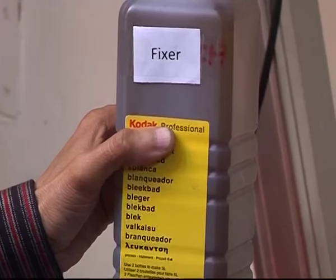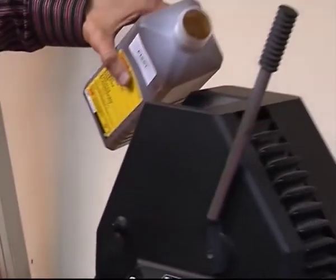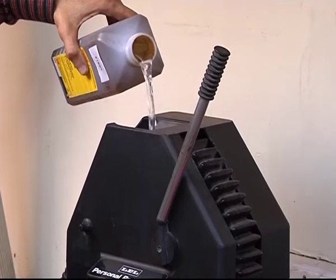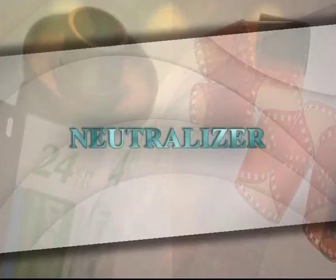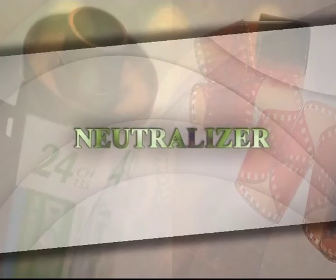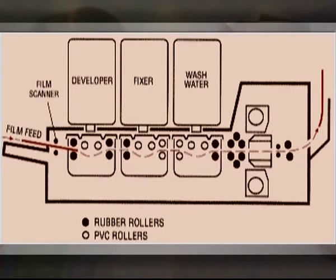Fixing. After leaving the developer, the film is transported into a second tank which contains the fixer solution. The fixer is a mixture of several chemicals. Neutralizer: when a film is removed from the developer solution, development continues because of the solution soaked up by the emulsion. It is necessary to stop this action to prevent overdevelopment and fogging of the film. Acetic acid is in the fixer solution for this purpose.